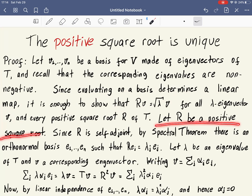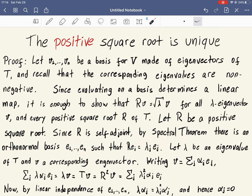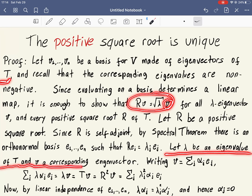So let R be a positive square root of T. By definition, a positive operator is self-adjoint. And by the spectral theorem, R also has an orthonormal basis which is made of eigenvectors. So on this orthonormal basis, they are eigenvectors of R. And now what we have to show is this for every eigenvector V of T. So let lambda be an eigenvalue of T, and V a corresponding eigenvector.